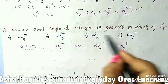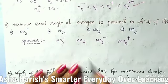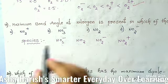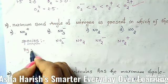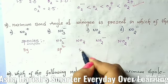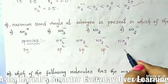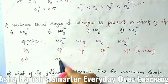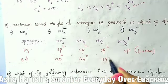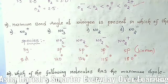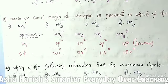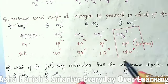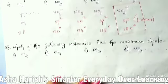Question 19: maximum bond angle at nitrogen in which species — NO2+, NO3⁻, NO2, or NO2⁻? NO3⁻ is sp² hybridized with 120°. NO2 is sp² with 134°. NO2⁻ is sp² with 115°. NO2+ is sp hybridized with a linear structure, giving a bond angle of 180°. So NO2+ has the maximum bond angle.